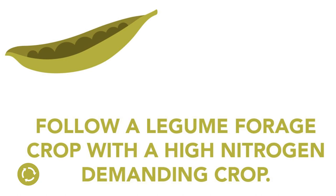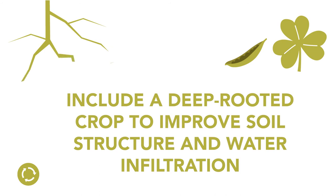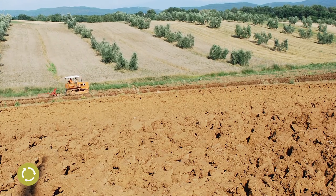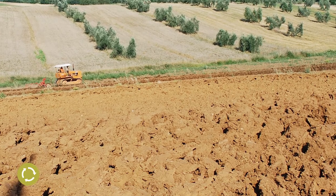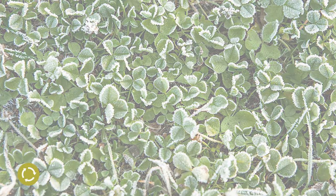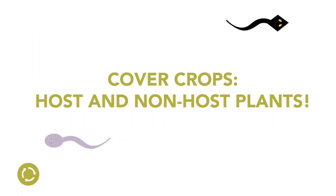Some crops are grown after each other to complement each other's needs. A legume forage crop, which fixes nitrogen, can be grown before a crop which demands high nitrogen levels. A deep-rooted crop, such as summer barley, can be grown after crops such as sugar beets to improve soil structure and water infiltration. Deep-rooting crops also bring back nutrients which were leached to deeper soil layers. Instead of leaving the soil bare after harvesting the main crops, you can grow cover crops after all crops harvested no later than October 1st. Be aware that also for cover crops, you should consider the nematode levels in relation to host and non-host plants.